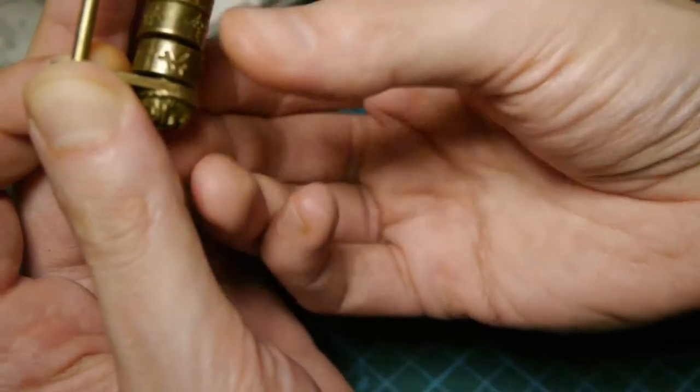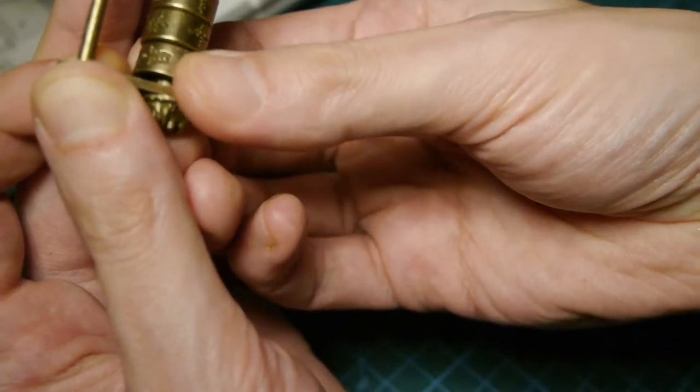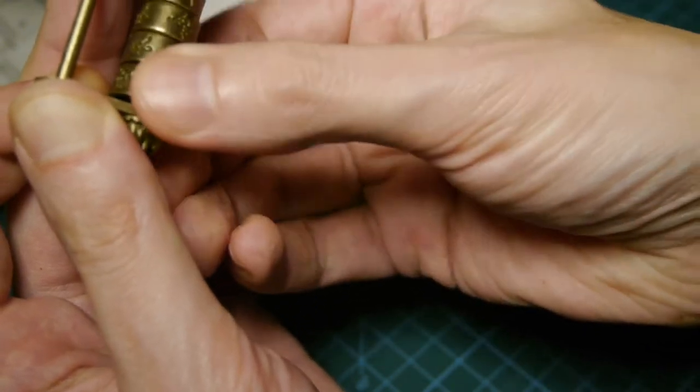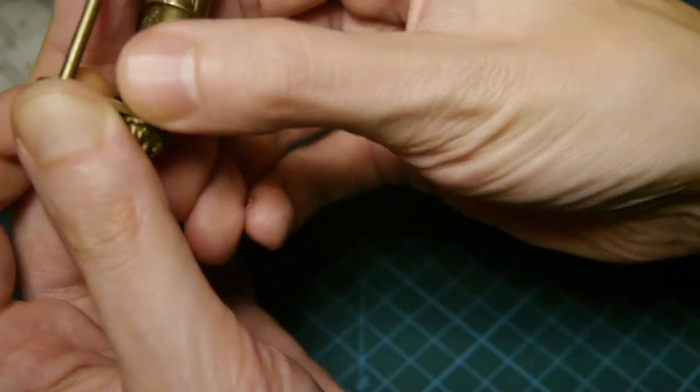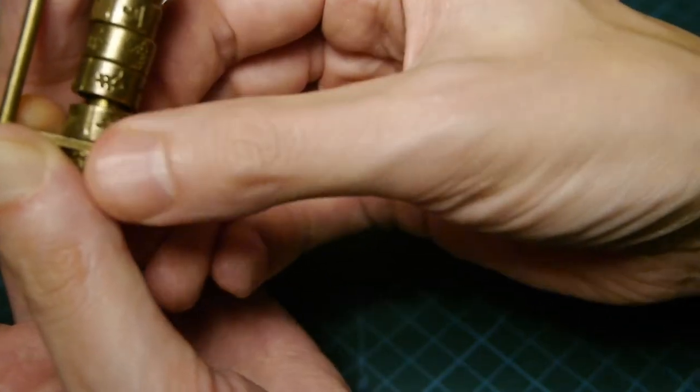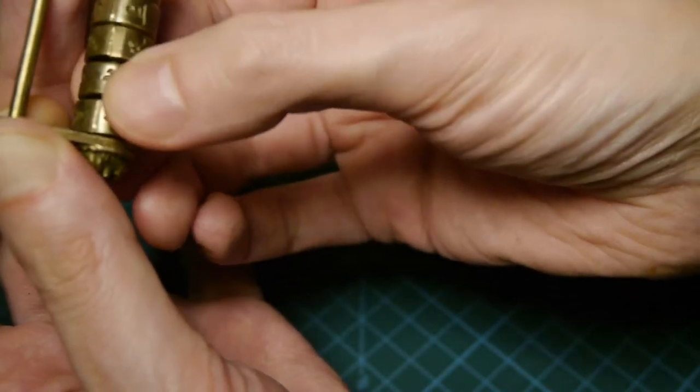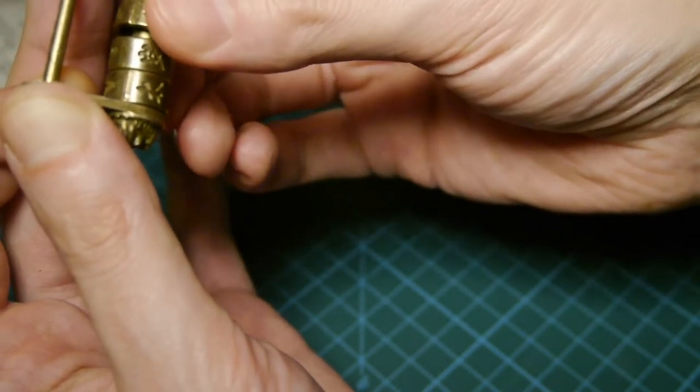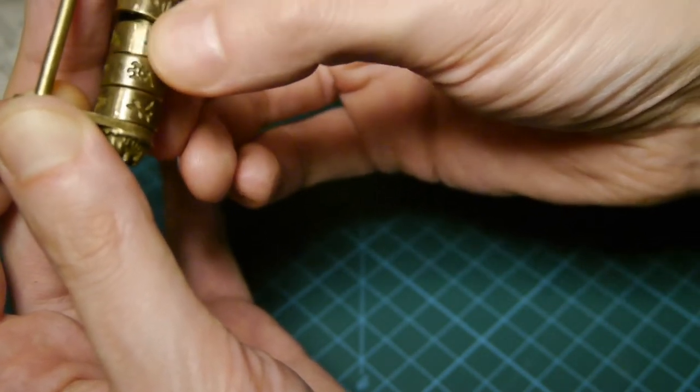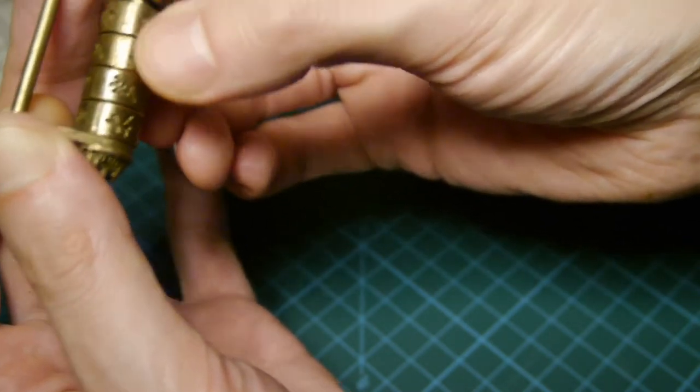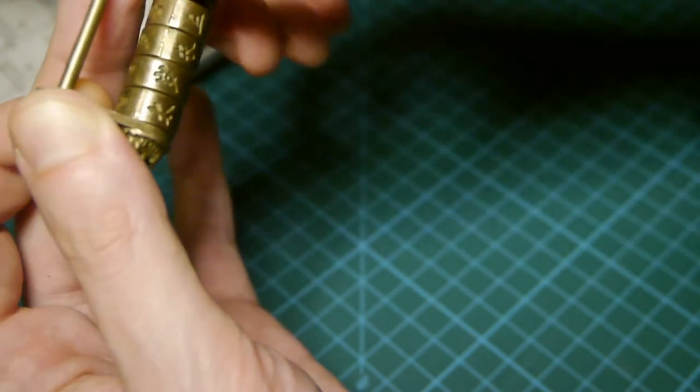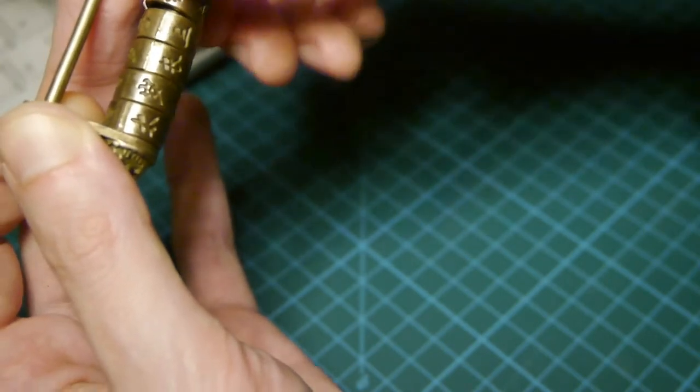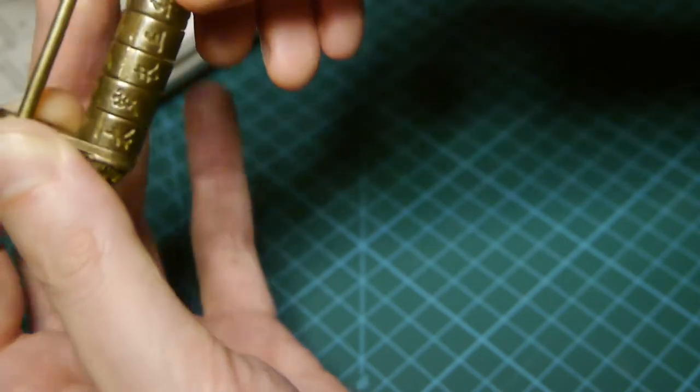So if we do that with this lock, I turn the leftmost wheel and at a certain point it drops down. And then we move on to the next wheel. There we go, it dropped down. And I think the third one is already in the good position. And the fourth one, so no, we should only need to turn the last wheel. There we go, it's open.